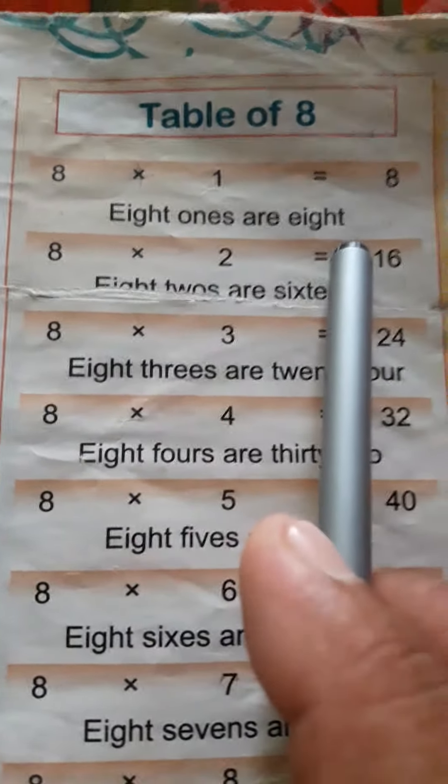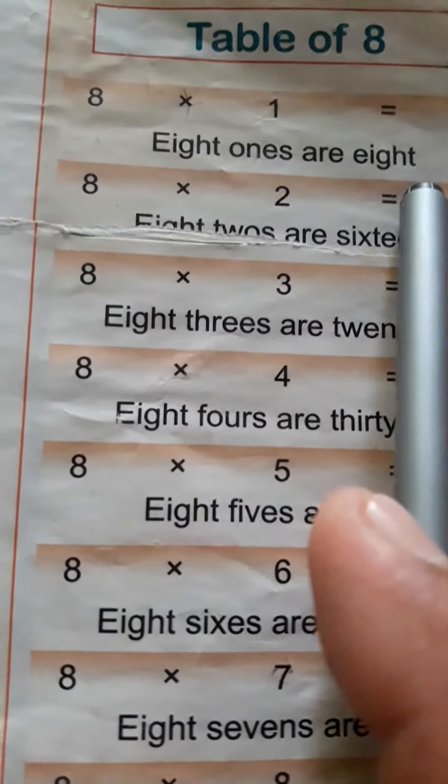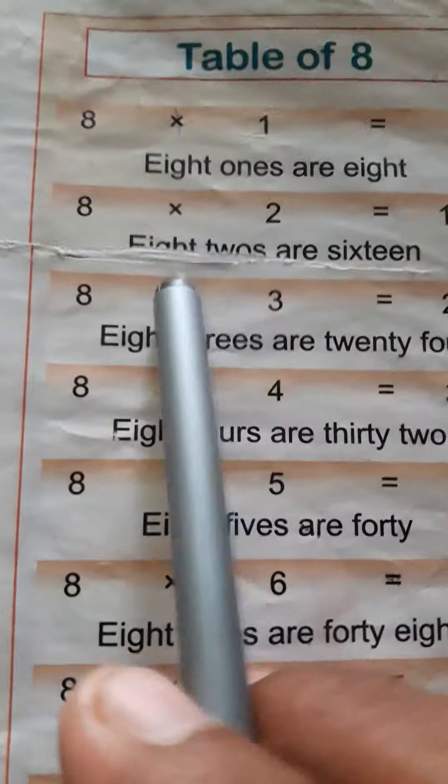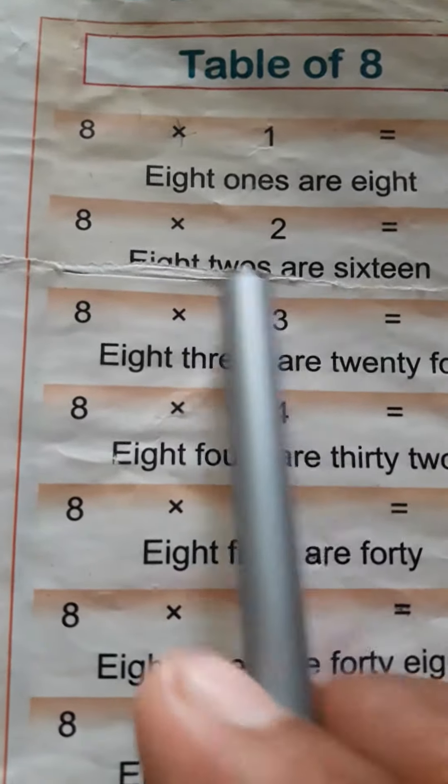Eight ones are eight. Eight ones are eight. Eight twos are sixteen. Eight twos are sixteen.